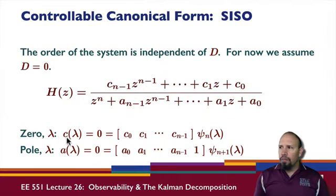If lambda is a zero of this function, then c(lambda) is equal to zero, which is equal to this times this vector. So this row times this column is actually c evaluated at lambda.